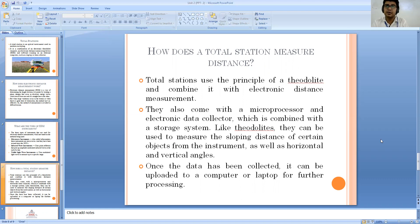If we discuss about the total station distance measurement unit, then the total station uses the principle of theodolite and combines it with the use of electronic distance measurement device. They come with microprocessors and electronic data collectors which are a combination of storage system. So in the case of theodolites, they can measure the sloping distance of particular objects from the instrument as well as the measurement of angles is possible with the help of total station - that is horizontal angles and vertical angles. Once we have collected all of our data, we can upload or collect it on our computer or laptop so that further processing can be done very easily.